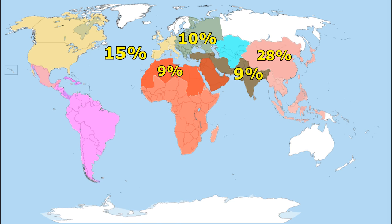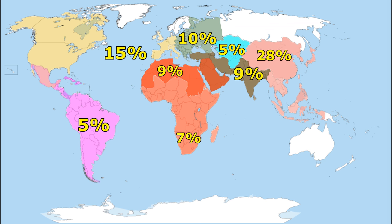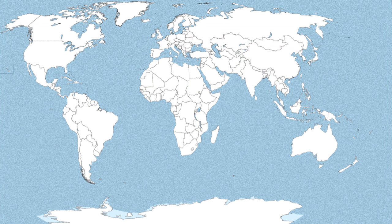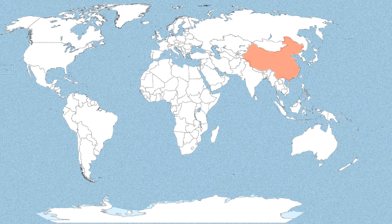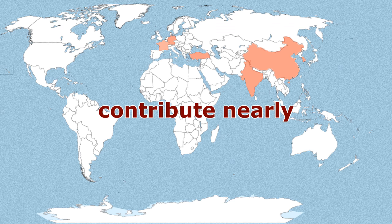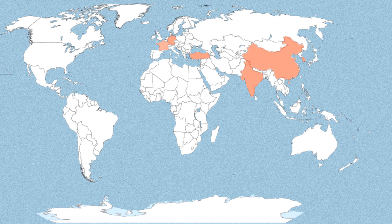At the lower end are Sub-Saharan Africa, Latin America, and Central Asia, each with 5% to 7% of the total number of outbound students. The major countries for outbound students are China, India, South Korea, Germany, Turkey, and France. China and India alone contribute nearly 30% of all outbound students.